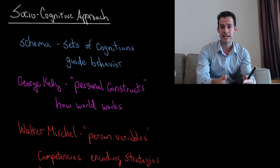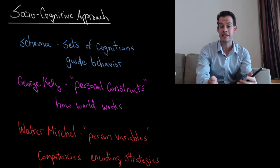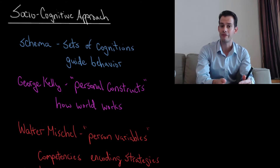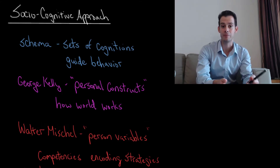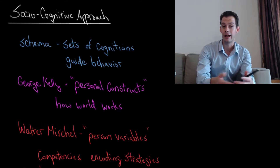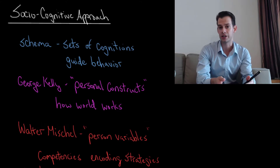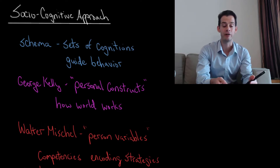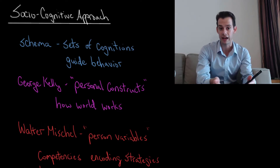The idea of schema is that we have sets of cognitions that guide our behavior. We might have schema for how to behave in different situations — you have a set of thoughts related to how you should behave in a classroom, at a party, or in a church. These schema are then going to influence your behavior, and that's going to influence your expression of your personality.